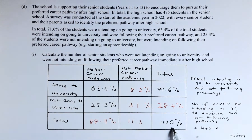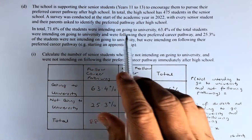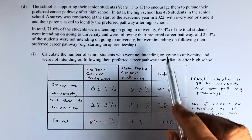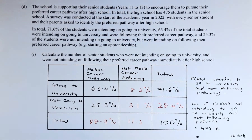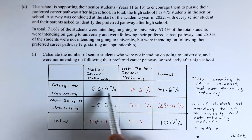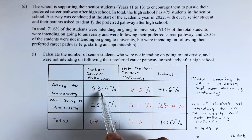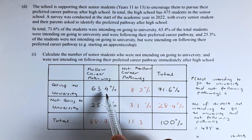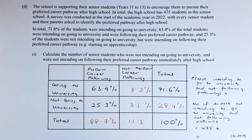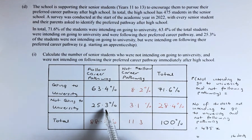So in the table, 71.6% intend to go to university. 63.4% were intending to go to university and were following their preferred pathway. And 25.3% were not intending to go to university but were intending to follow their preferred pathway.